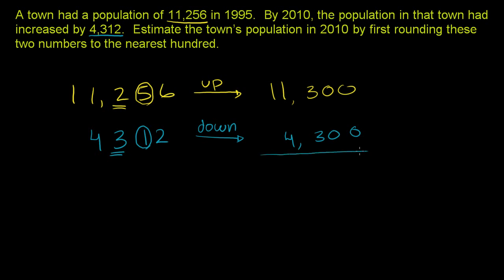Now we're ready to add our rounded numbers. 0 plus 0 is 0, 0 plus 0 is 0, 3 plus 3 is 6. Let's put a comma here so it's easy to read every third digit. 1 plus 4 is 5, and then 1 plus nothing, so we just bring down that 1. So our estimate of the town's population in 2010 is 15,600.